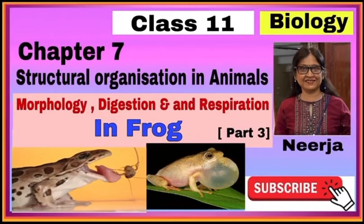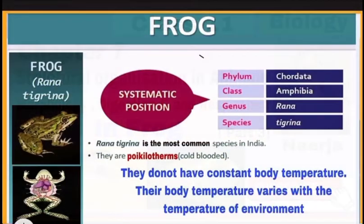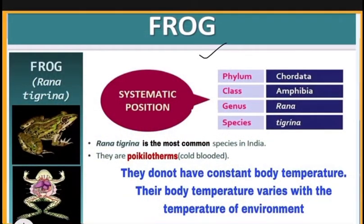This is part 3 of chapter 7: Structural Organization in Animals. Here we will discuss morphology, digestion, and respiration in frog Rana tigrina. The frog belongs to phylum Chordata, class Amphibia, genus Rana, and species tigrina, so its scientific name is Rana tigrina.